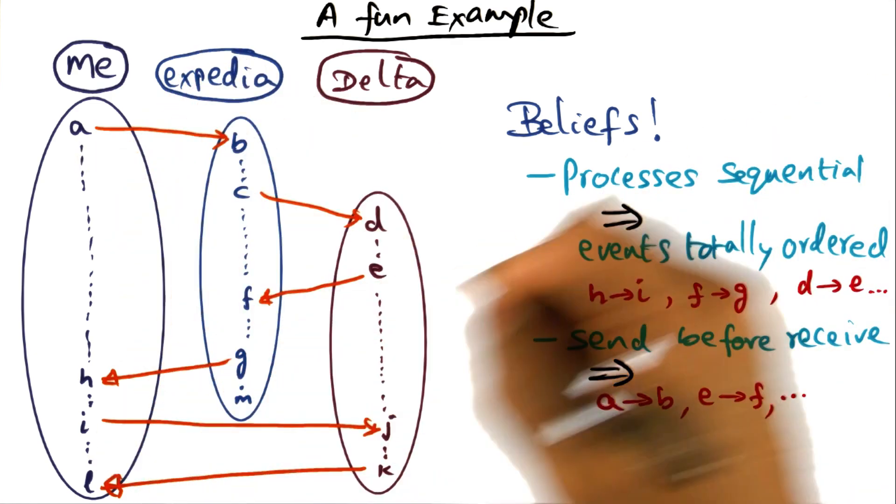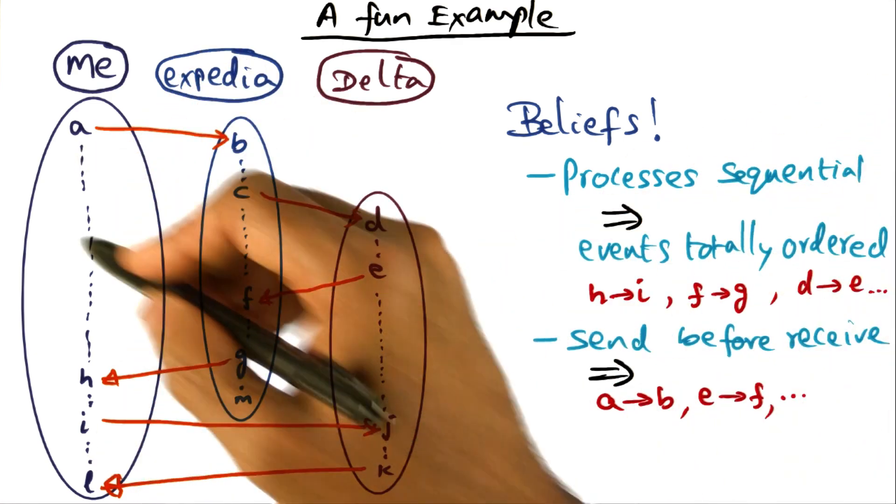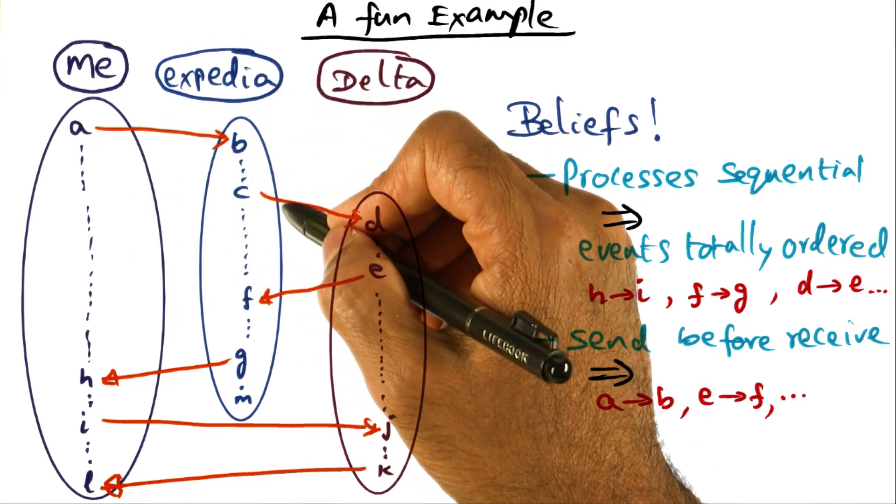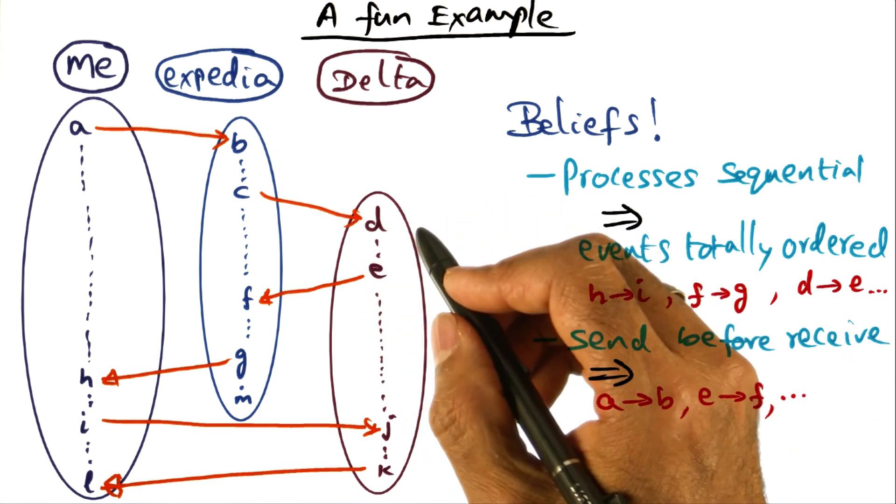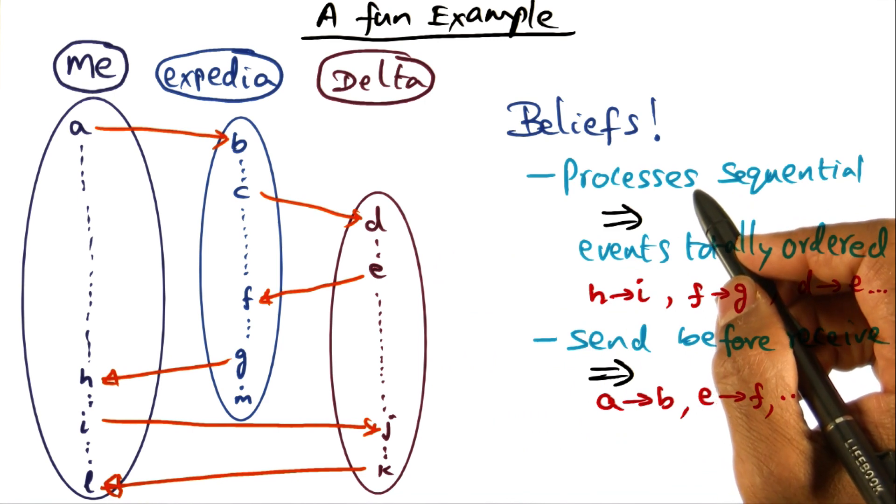That events within the process are sequential. And across processes, when you have communication events, send happens before receive. So these are two core beliefs that we have about the working of a distributed system. And we call these beliefs as the happened before relationship.